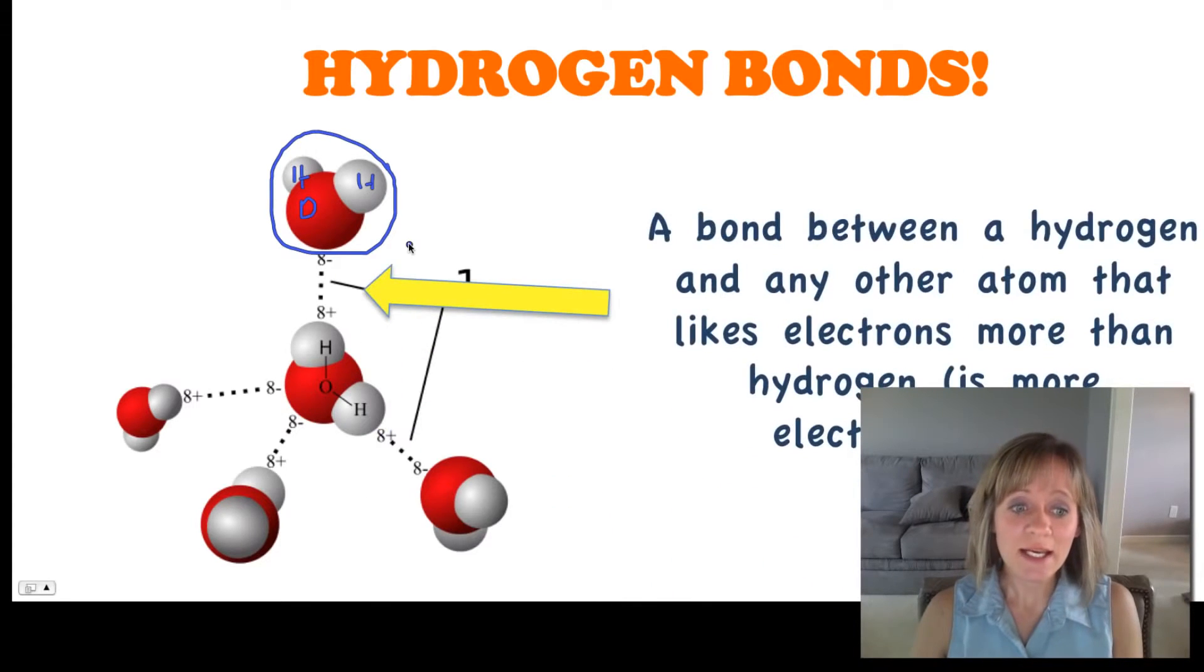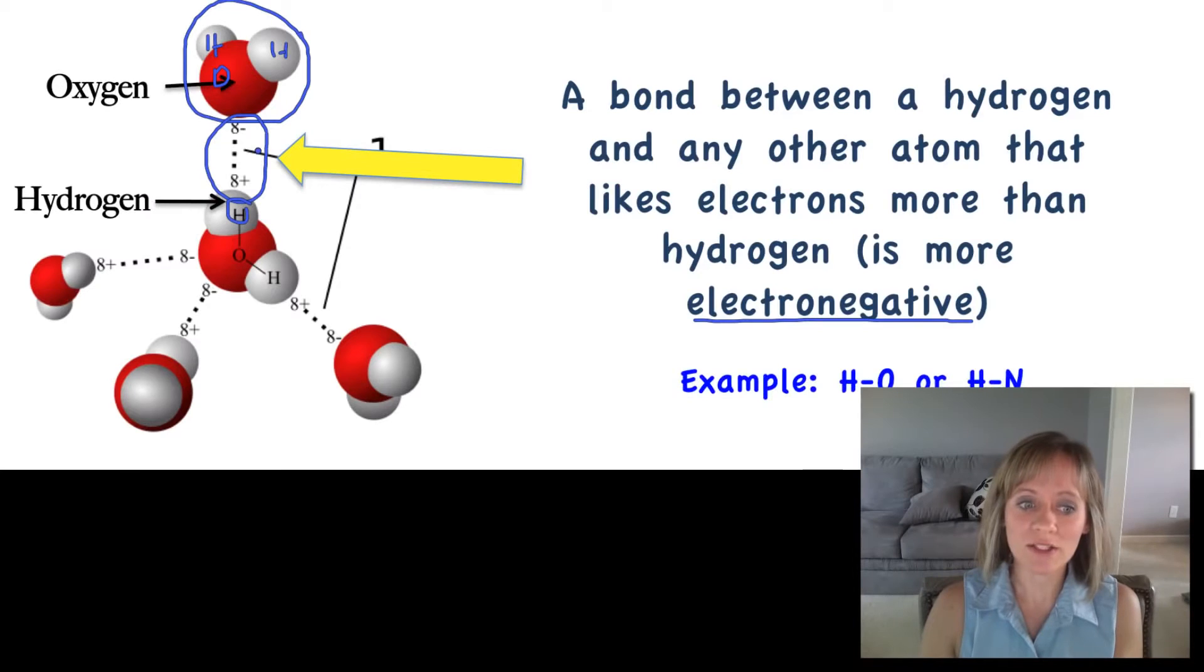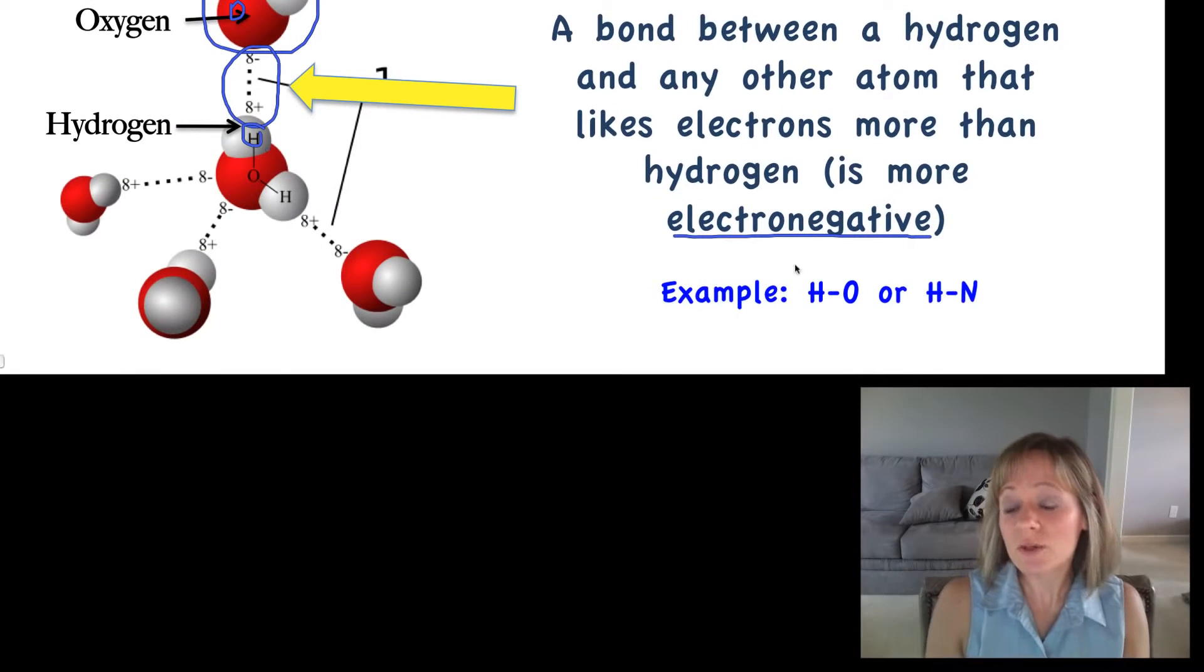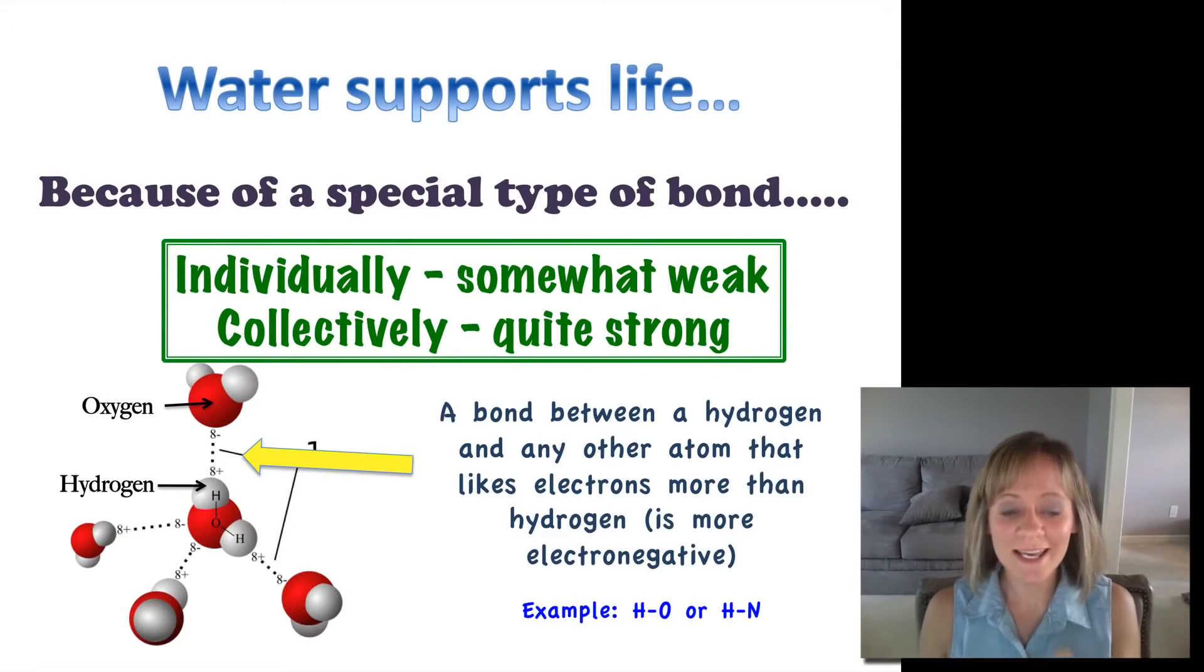Now let's examine where the hydrogen bond is. A hydrogen bond is a bond between a hydrogen and any other atom that likes electrons more than hydrogen does—we call that being more electronegative. So oxygen actually likes electrons more, it draws electrons towards itself more than hydrogen does. Individually hydrogen bonds are somewhat weak, but when you put a lot of water molecules together and there's a lot of hydrogen bonds, they're actually quite strong, and that's why water is so cool.